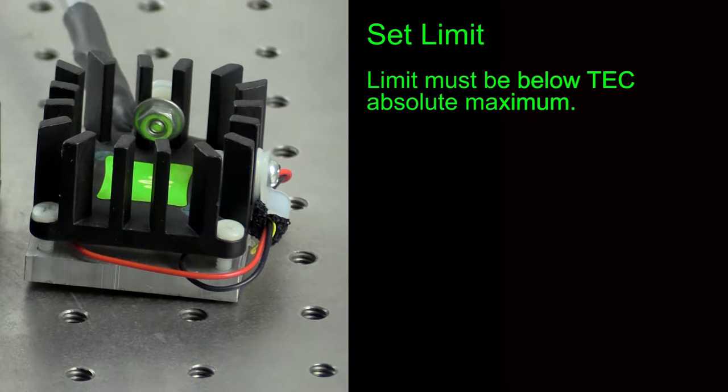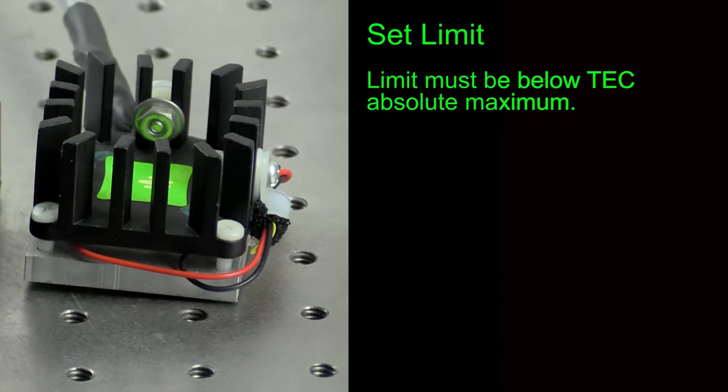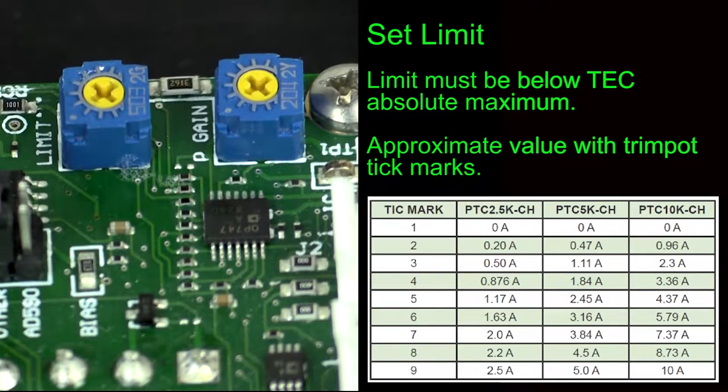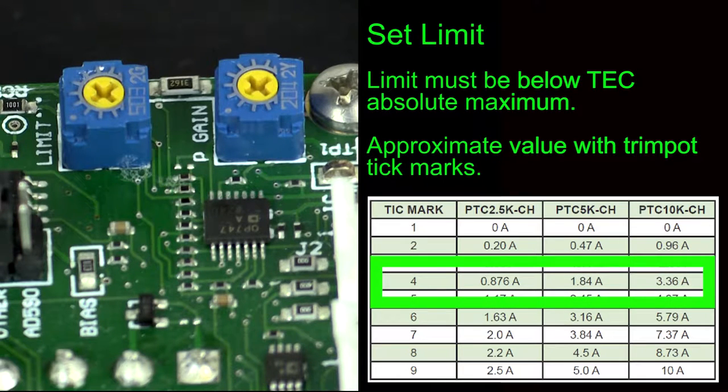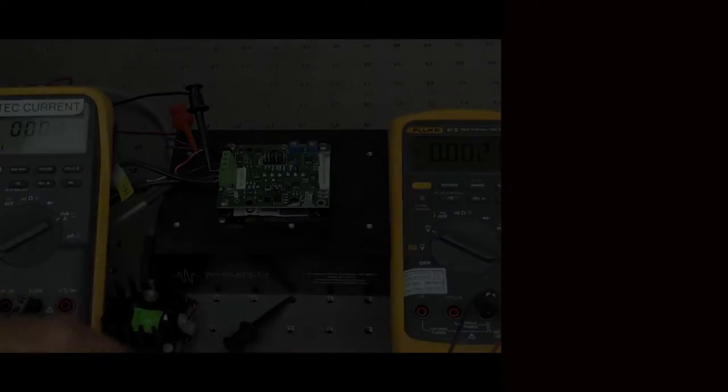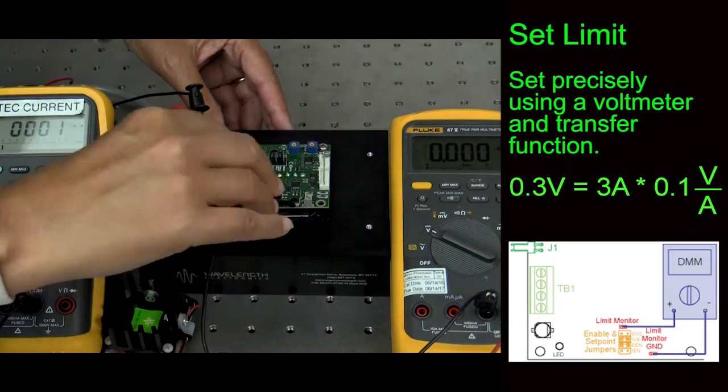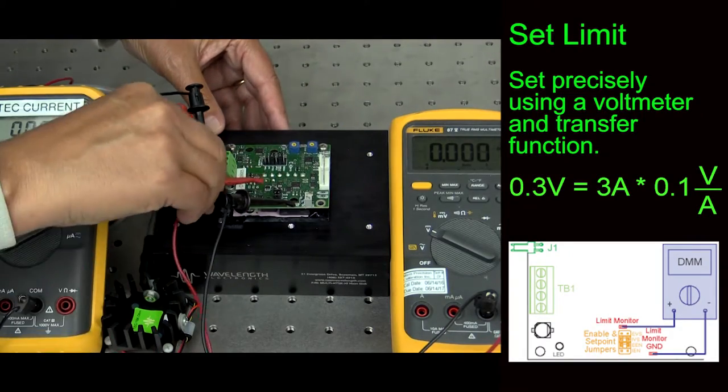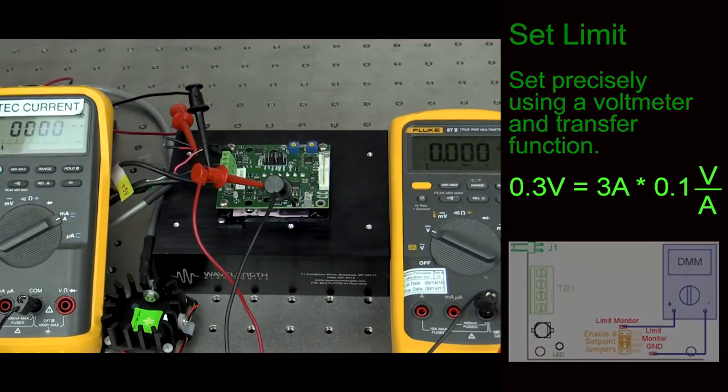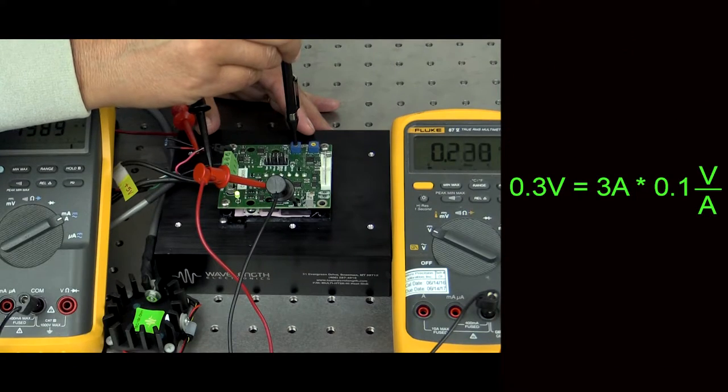Now we need to determine the maximum current we want delivered to the thermoelectric and set the PTC limit. From the thermoelectric datasheet, find the absolute maximum current. The limit needs to be set below this value. For our application, we're using a 3 amp thermoelectric. We can either look at the chart in the PTC datasheet that says 3.3 amp limit is around TIC 4 and set it roughly that way, or hook up a voltmeter to the limit monitor and ground and specifically set it using the limit monitor transfer function. We do need power on at the unit to do it that precisely.